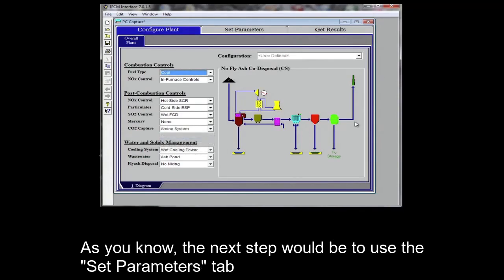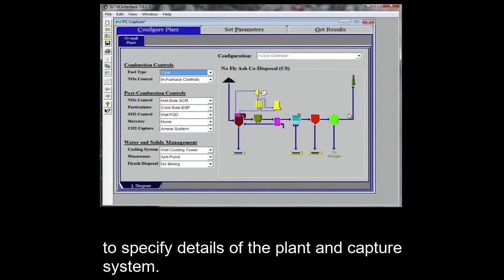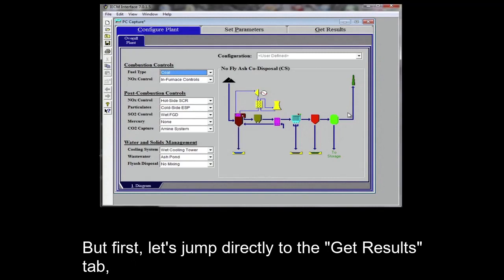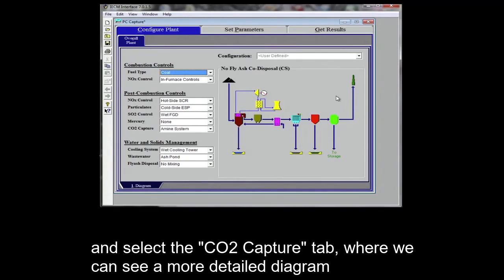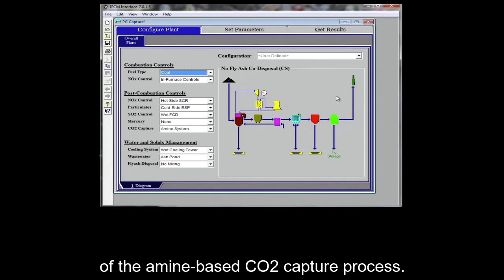As you know, the next step would be to use the set parameters tab to specify details of the plant and capture system, but first, let's jump directly to the get results tab and select a CO2 capture tab where we can see a more detailed diagram of the amine-based CO2 capture process.